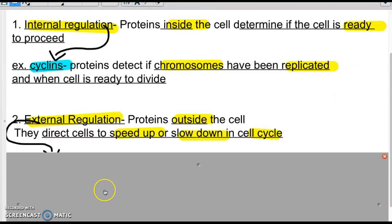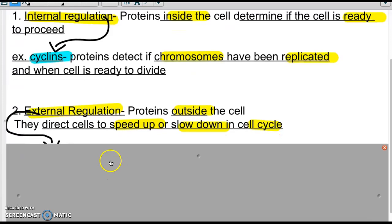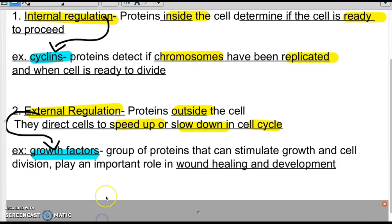The second type of proteins are external regulation proteins. They are proteins outside of the cell, and they direct the cells to speed up the cell cycle or slow down the cell cycle based off of what's going on in the environment that they see. An example of external regulating proteins are proteins called growth factors. Growth factors are the type of external proteins that you would need to know, and they are really important in playing a role in healing if you have a wound or specifically development as you're growing.